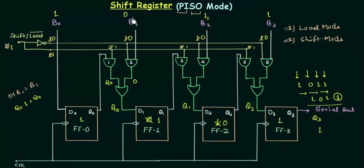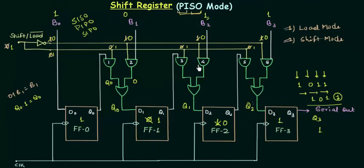This is how the shift register in parallel input serial output mode works. You have already studied the other three modes: serial input serial output, parallel input parallel output, and serial input parallel output. Now we have also completed the parallel input serial output mode. There are still 2 topics left in the shift register: the bidirectional shift register and the universal shift register. In the next presentation we will study the bidirectional shift register.